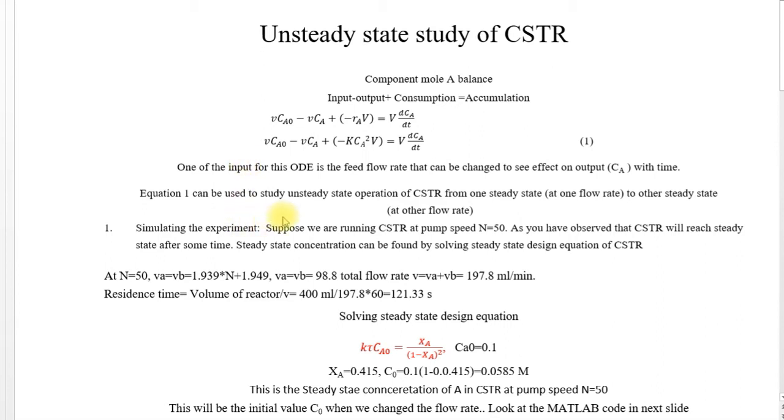Suppose we are running the experiment. We change the flow rate by changing the pump speed. So suppose we are running the CSTR at pump speed equals 50. We have an equation which converts pump speed to the flow rate. So our flow rate VA and VB will be this.